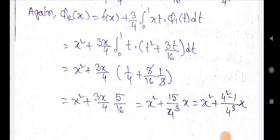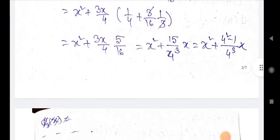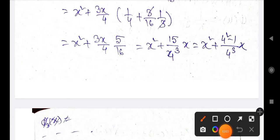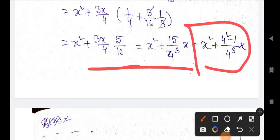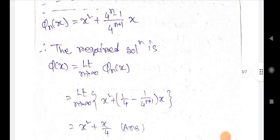Equals x² + (3x/4)·∫₀¹ t·(t² + 3t/16) dt, which gives x² + (3/4)·x·(1/4 + 3/16·(1/3)). Simplifying, equals x² + (3/4)·x·(1/4) and so on. Similarly, we get φₙ(x) = x² + (4ⁿ⁻¹)/(4ⁿ⁺¹)·x.